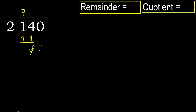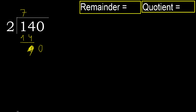Eliminate 0 on this side. 0 is less, therefore next. There is no number, therefore finish it — complete with 0 because we finish with this number.